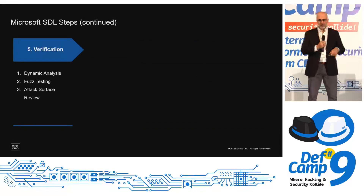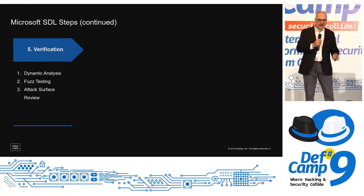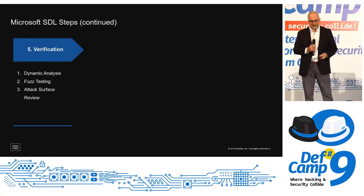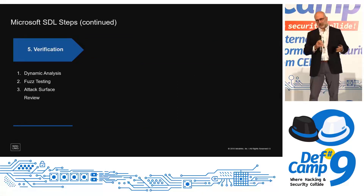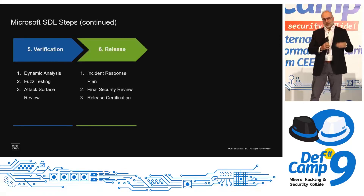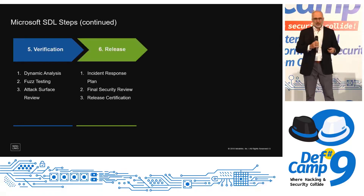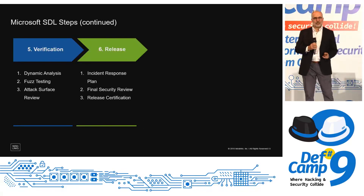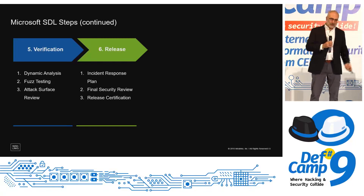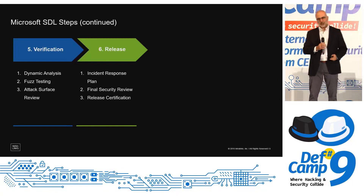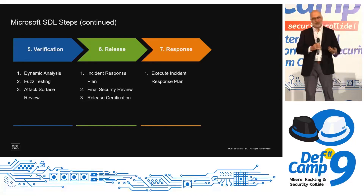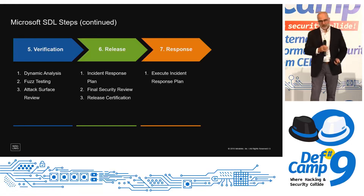Then you go into the verification stage, where before — or sometimes after — release, you do dynamic analysis, fuzzing, and review what the real attack surface is. Then you go to release mode. They talk about incident response plan — it's not really an application security task per se, but it's obviously a consideration. You do the final security review, approve, it goes into production, and in the last step you know how to execute the response if something happens.